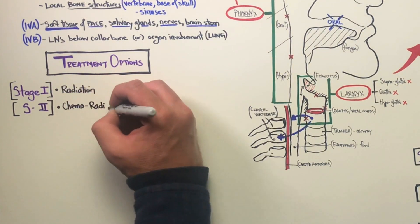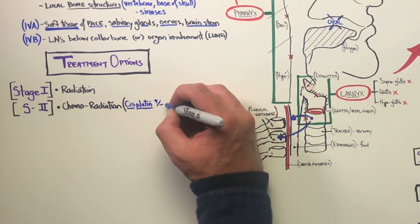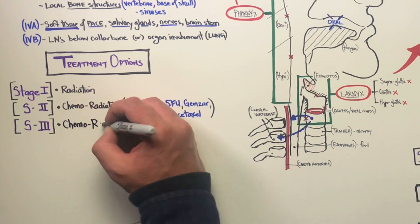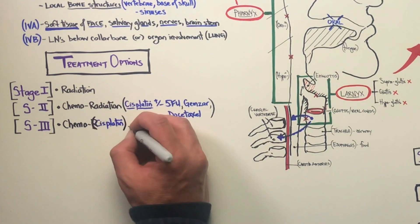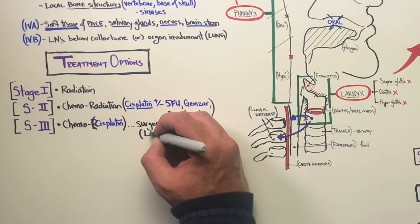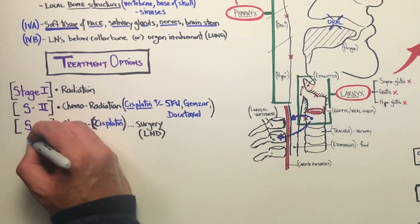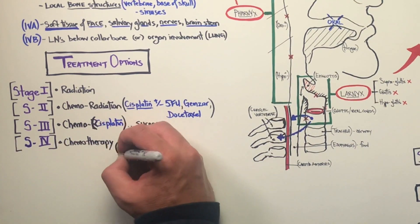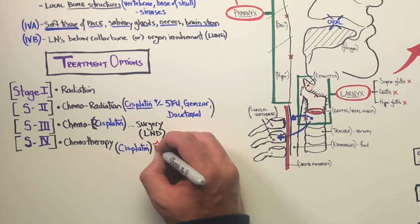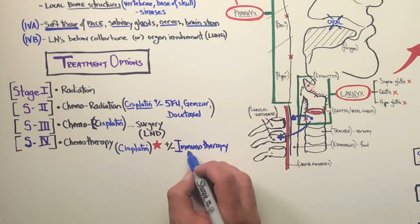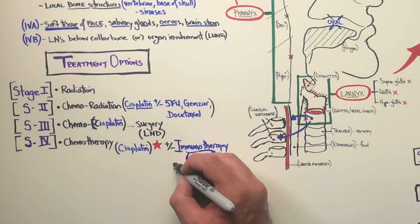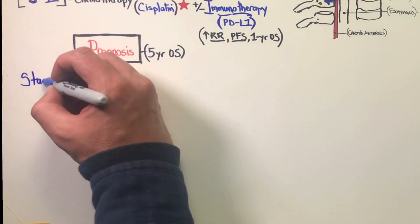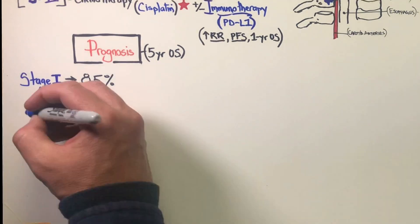Treatment options are again based on stage, just as in laryngeal carcinomas. Stage 1: radiation. Stage 2: chemotherapy and radiation concurrently — cisplatin is the chemotherapy of choice, unless we have an elderly population or anyone with kidney issues, in which case carboplatin is used instead. Stage 3: chemotherapy with cisplatin and surgery with lymph node dissection. Stage 4: chemotherapy with cisplatin as well as immunotherapy with pembrolizumab, which shows increased response rates, progression-free survival, and one-year overall survival in cases that are PD-L1 positive or have a high CPS (combined positive score).